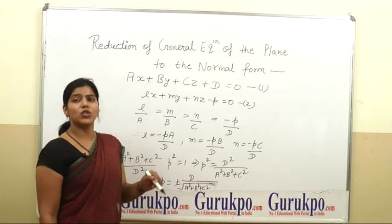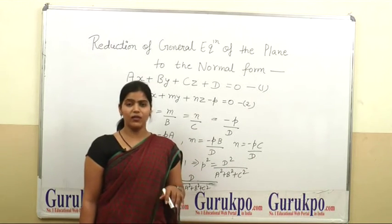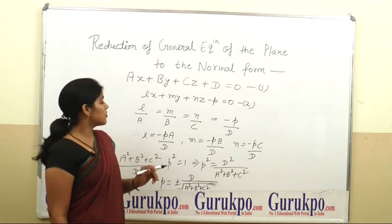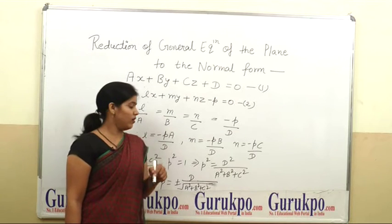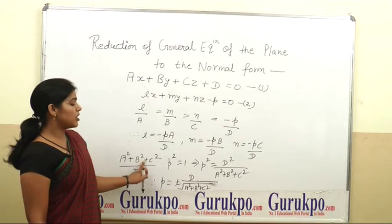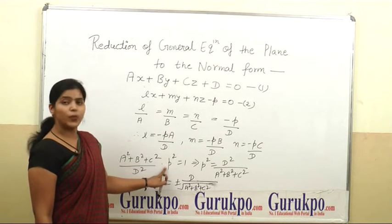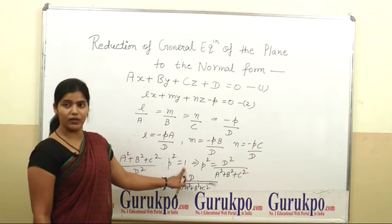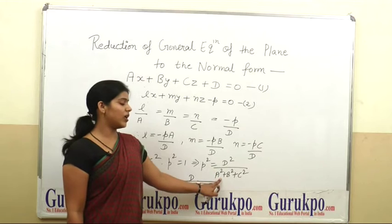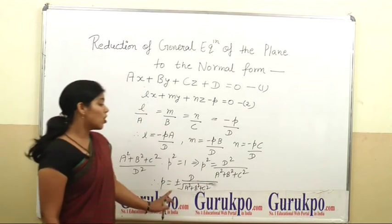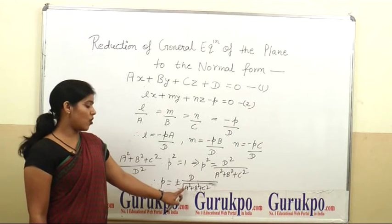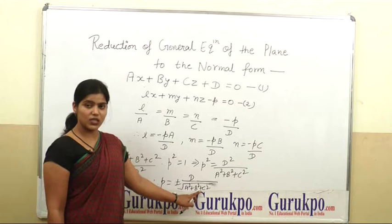Now, L, M and N are the direction cosines of the normal to the plane, since L square plus M square plus N square is equal to 1. Substituting the values of L, M, N, we can write A square plus B square plus C square into P square divided by D square is equal to 1. Or we can write P square is equal to D square divided by A square plus B square plus C square. Therefore the value of P is equal to plus minus D upon square root of A square plus B square plus C square.